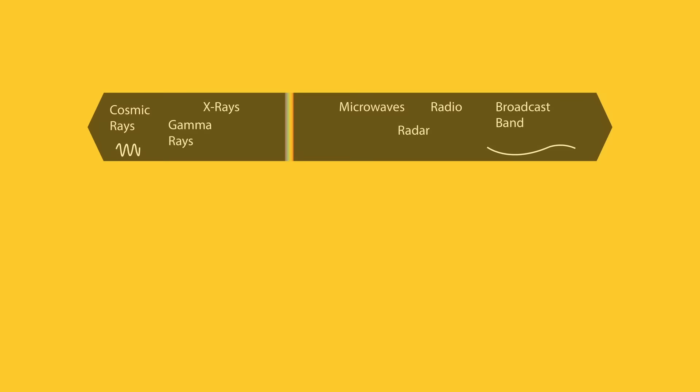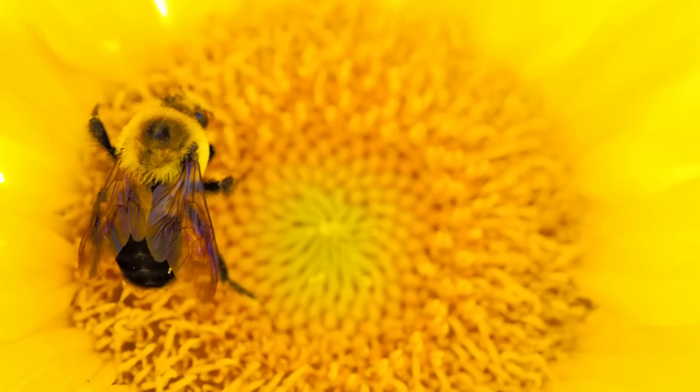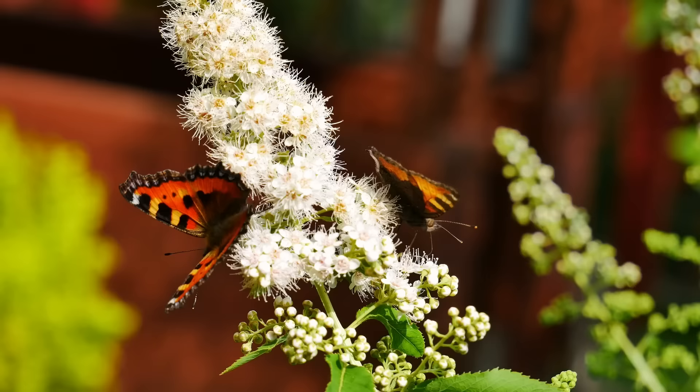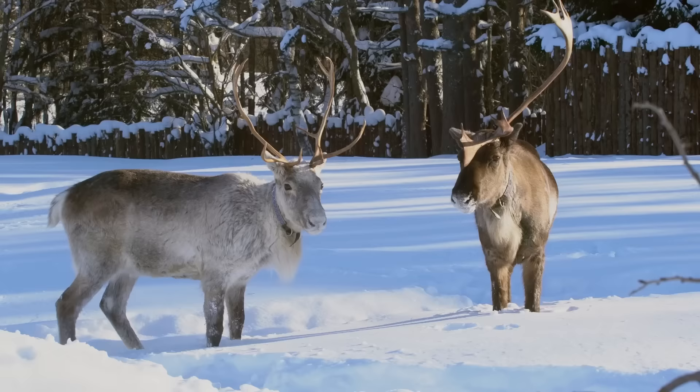Standard machine vision camera sensors are really only sensitive to wavelengths in the visible spectrum and then slightly out into the near-infrared. Some animals have adapted to seeing these wavelengths — animals like birds, bees, butterflies, and even some mammals.